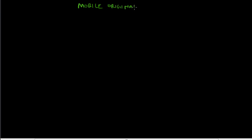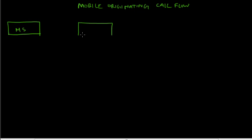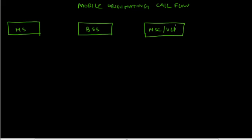Let's look at the mobile originated call flow in this tutorial. Let's draw this — this is the MS, BSS, MSC/VLR, and PSTN. We are assuming that the location update has already happened and the MS wants to make a phone call to a landline number in PSTN.